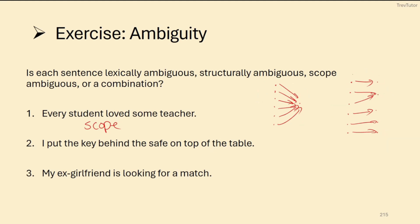Okay, two, I put the key behind the safe on top of the table. This I want to argue is structural ambiguity. Now why? Because we have a prepositional phrase on top of the table. Now you're putting the key behind the safe on top of the table.